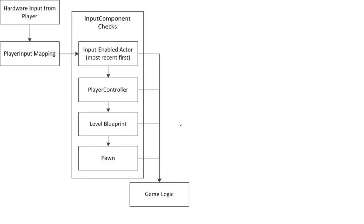After that it goes to your player controller. Your player controller does whatever it needs to do, and anything it doesn't handle goes to the level blueprint. After that it goes to the pawn, and then all of this input is passed over to the game logic. So if you've ever tried to accept input from an actor you just threw in and didn't enable it, this would be why it was ignored — and this is why your controller and your characters and your pawns automatically accept input, because they're designed to.